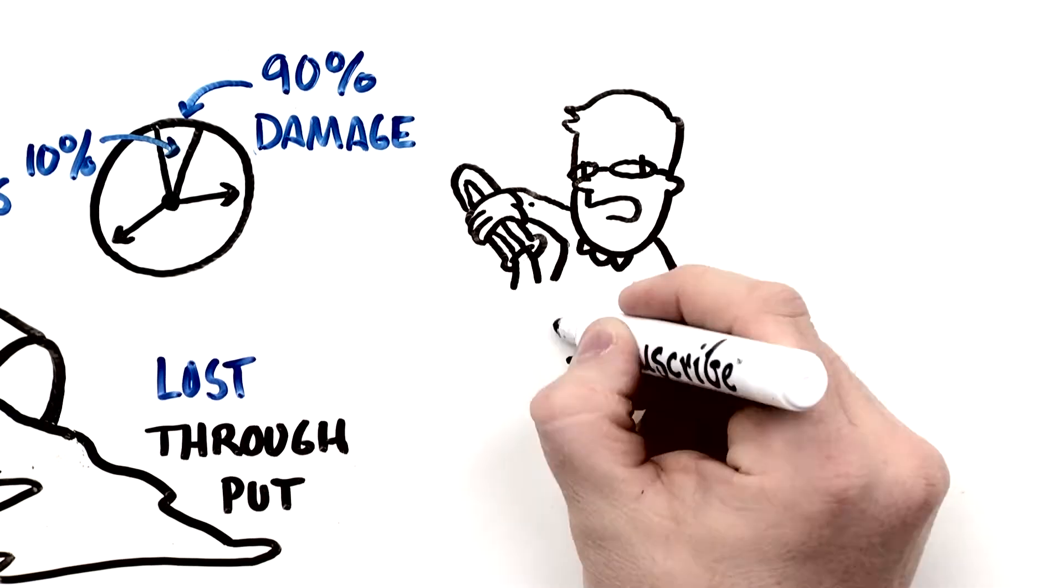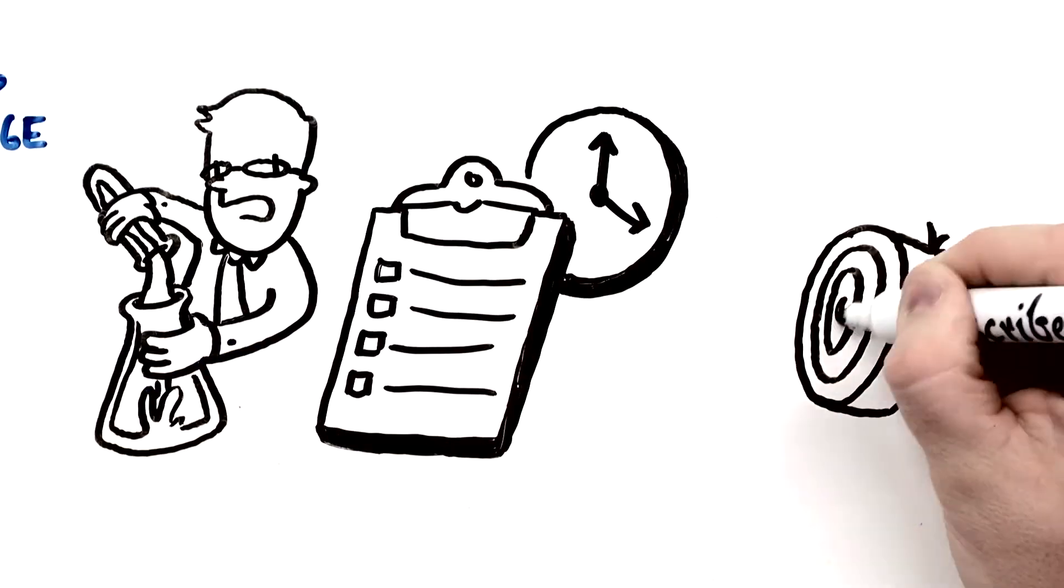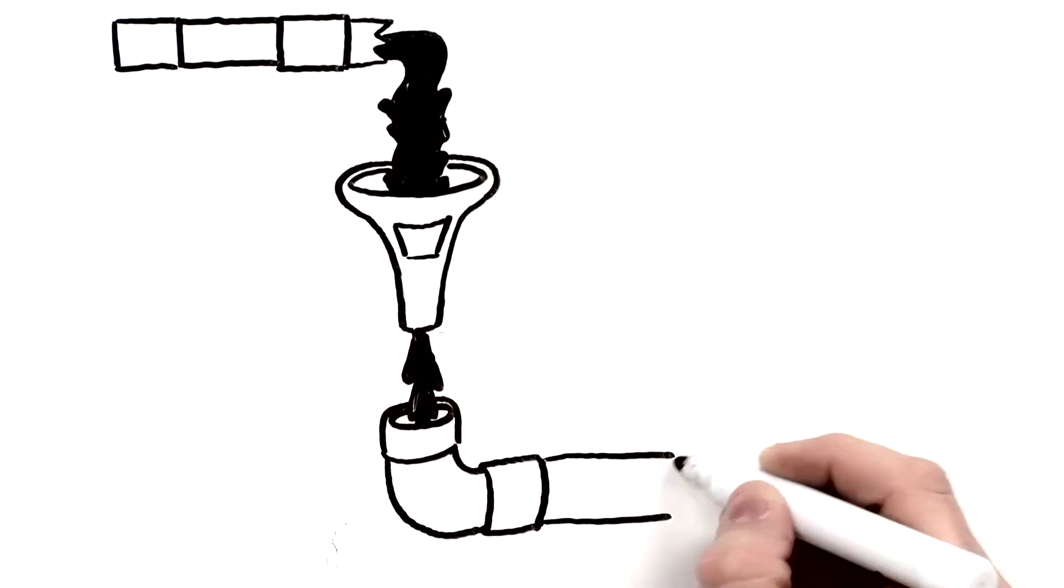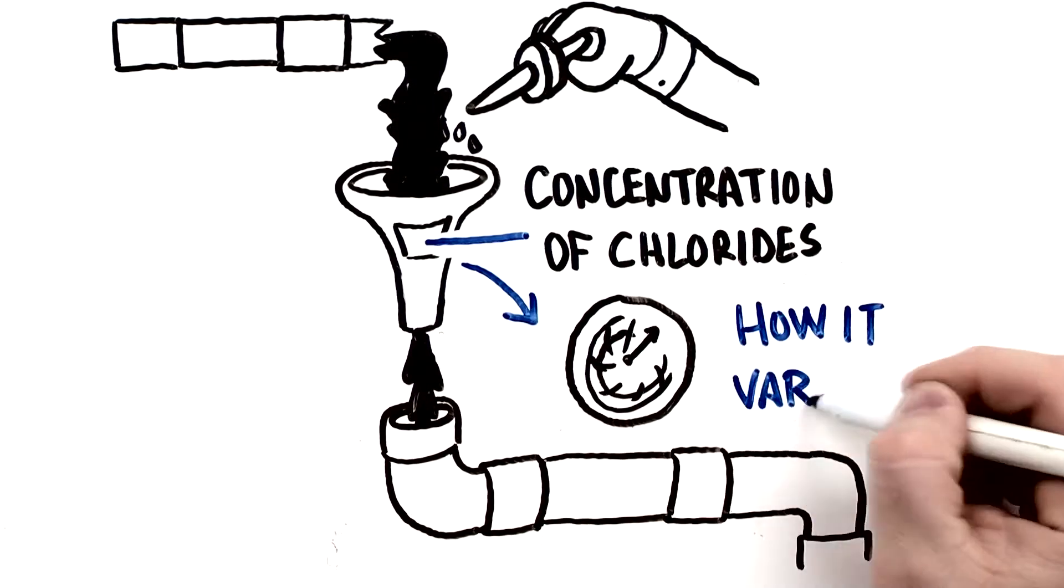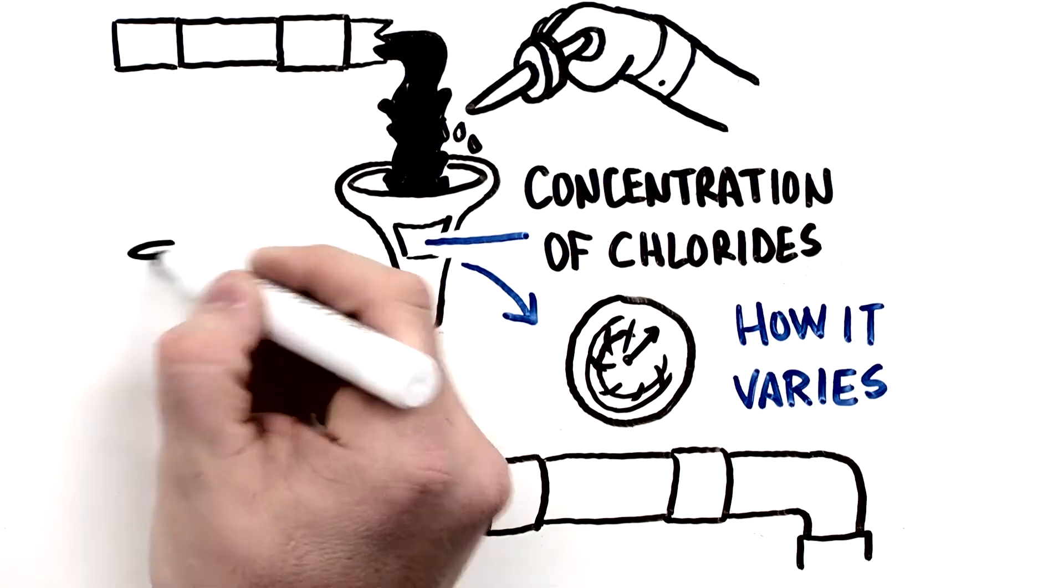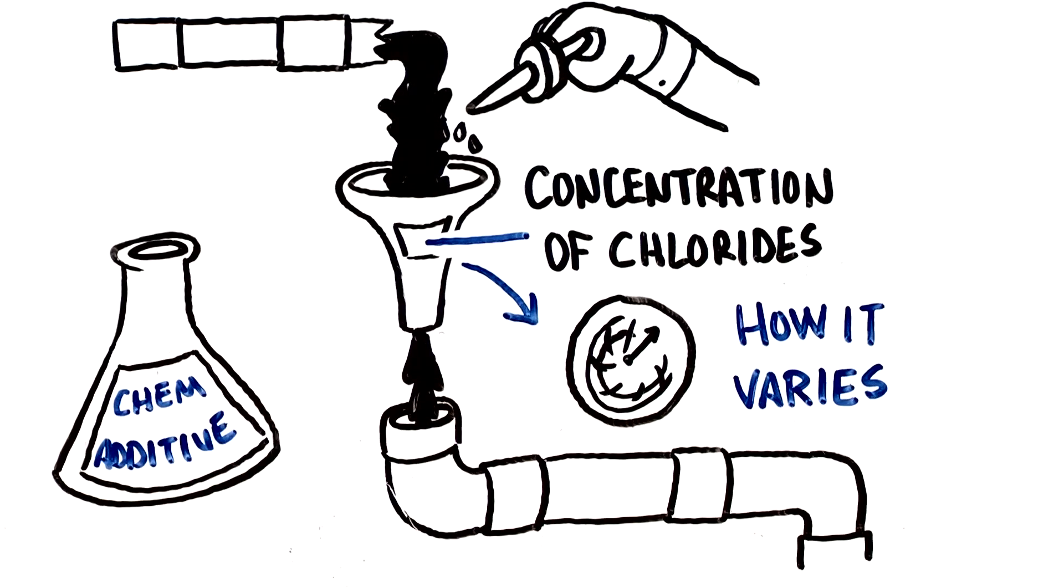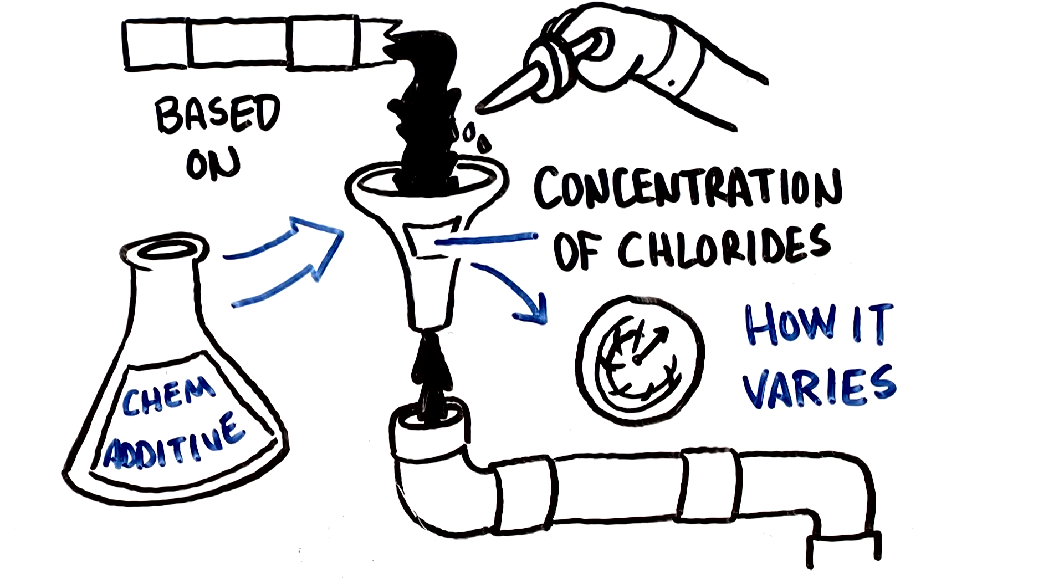Current wet chemistry and lab procedures take time and have questionable accuracy. The major challenge in controlling crude overhead corrosion is to know the concentration of chlorides at any given time and how it varies. Control measures such as chemical additive addition are often based on the chloride concentration at any point in time.